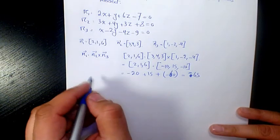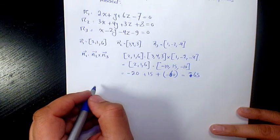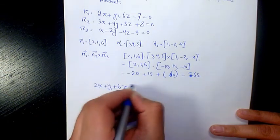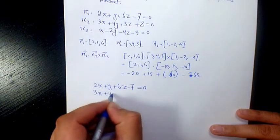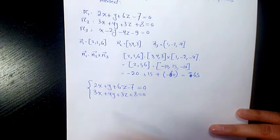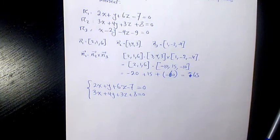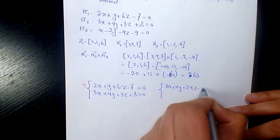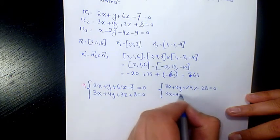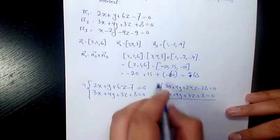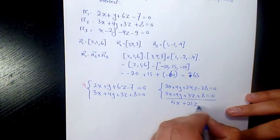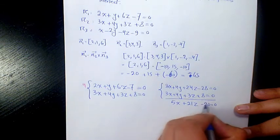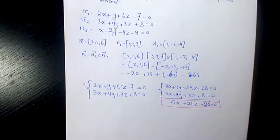Let's find that single point using the elimination method. We have: 2x plus y plus 6z minus 7 equals zero, and 3x plus 4y plus 3z plus 8 equals zero. Multiplying the first by 4: 8x plus 4y plus 24z minus 28 equals zero. Subtracting the second equation gives 5x plus 21z minus 36 equals zero.